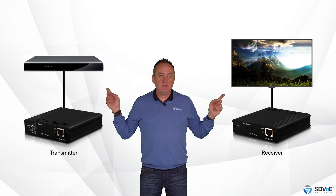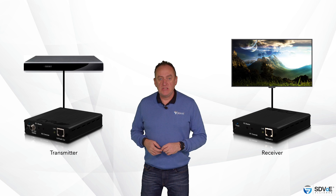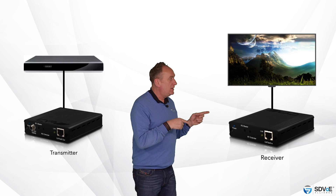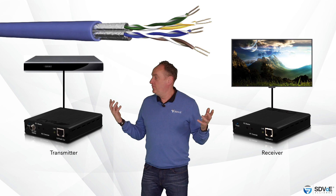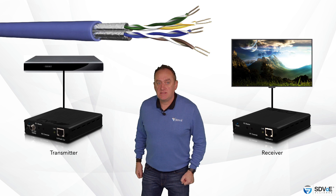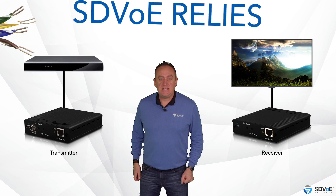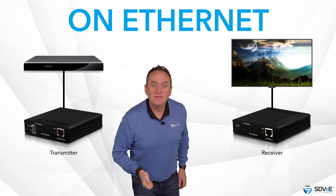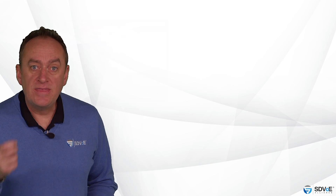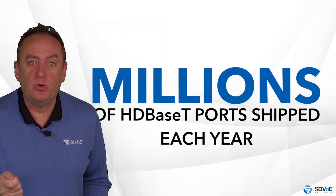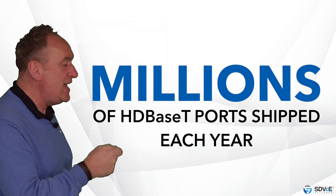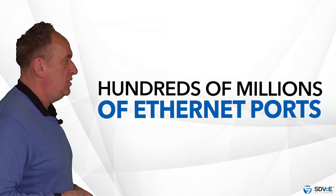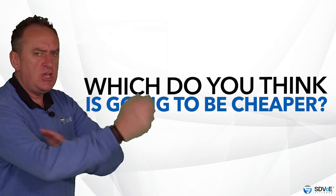HDBaseT point-to-point baluns are the most popular choice for sending video signals from a source to a display across a category cable, but there are other ways. SDVoE relies on Ethernet — it's not proprietary. There are millions of HDBaseT ports shipped each year compared to hundreds of millions of Ethernet ports, so which do you think is going to be cheaper?